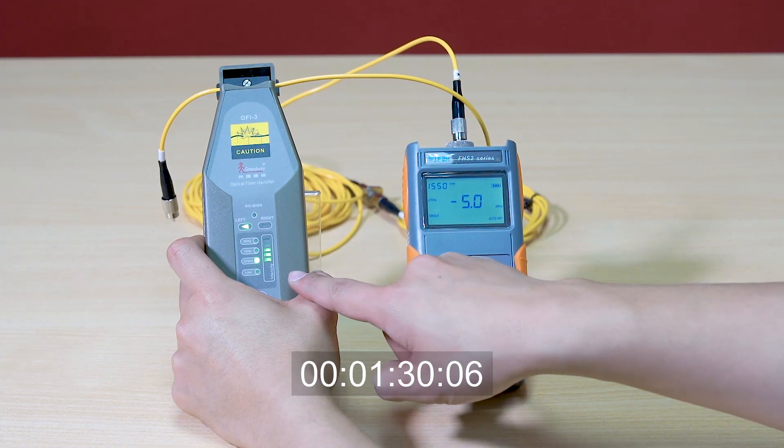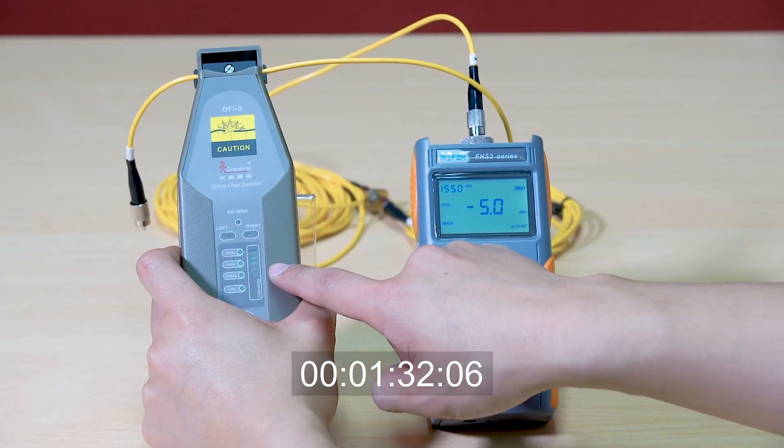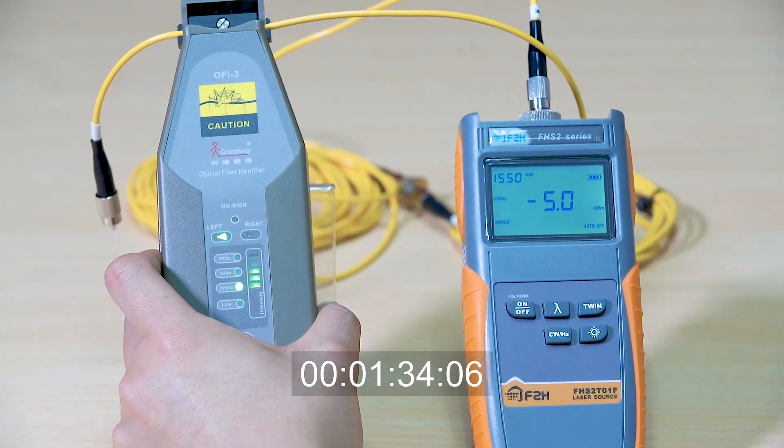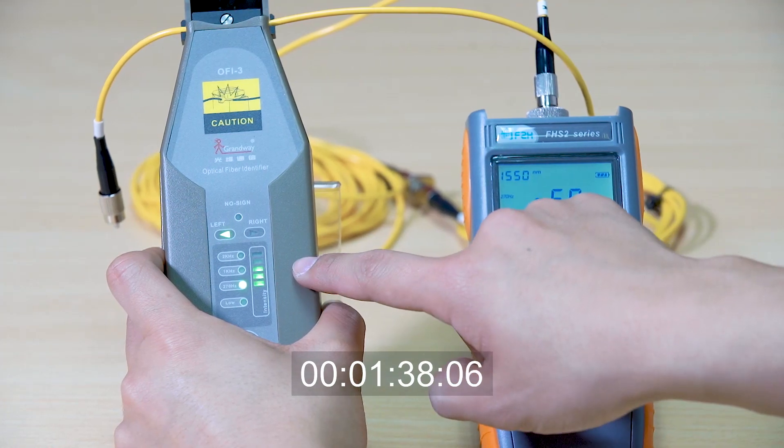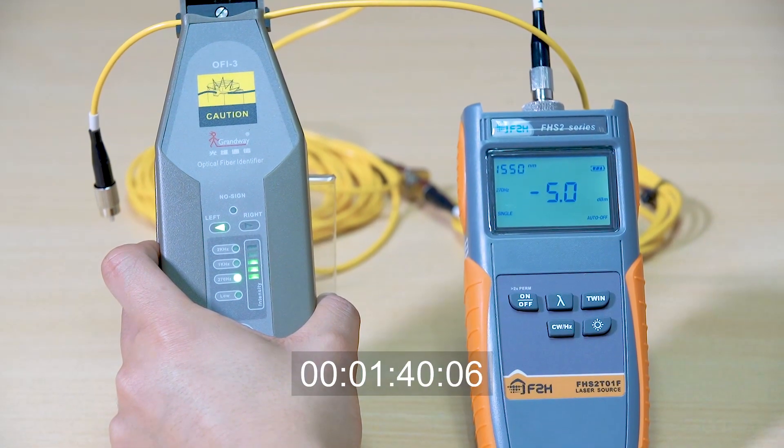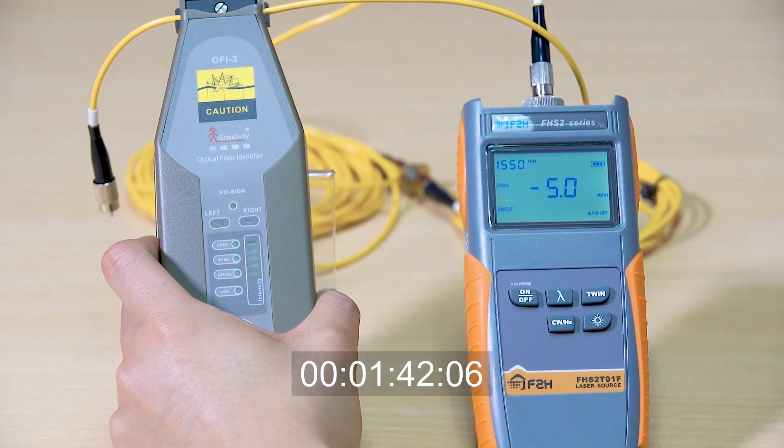The signal intensity indicator lights up to tell you how strong the signal is. There are five LEDs in a line. More of them means the signal is stronger.